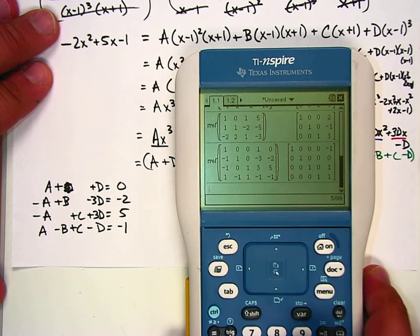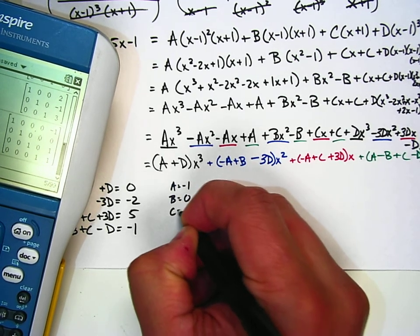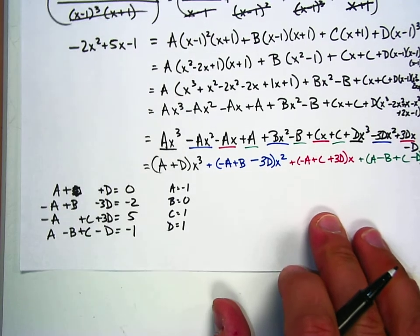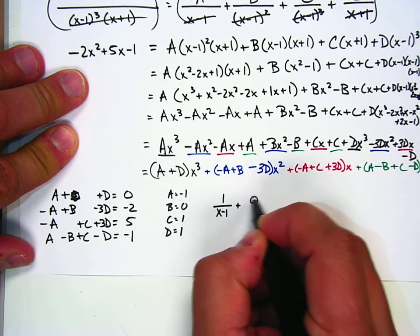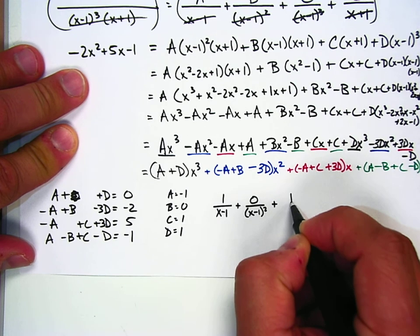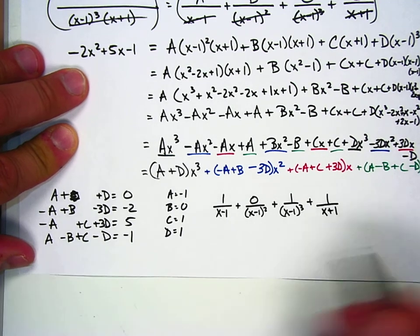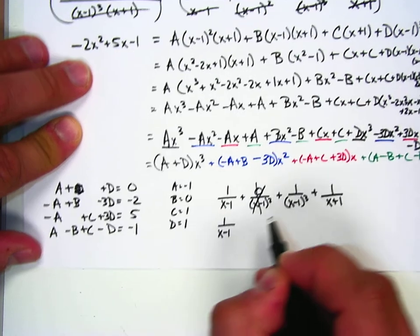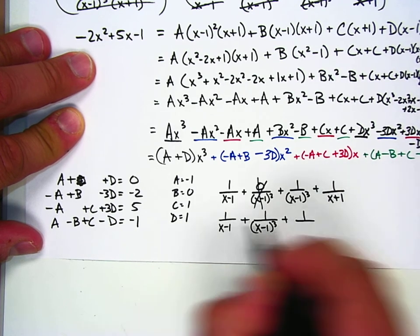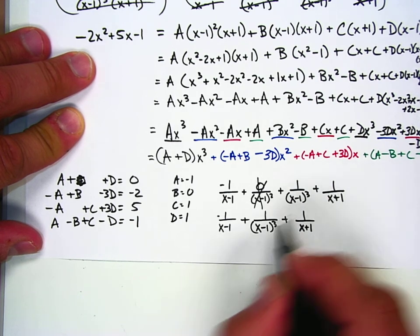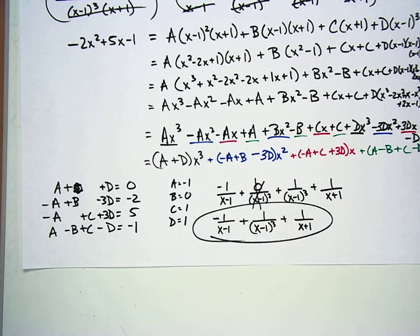So our final answer is: since b equals 0 we drop that term, leaving negative 1 over x minus 1, plus 1 over x minus 1 cubed, plus 1 over x plus 1. Good job.